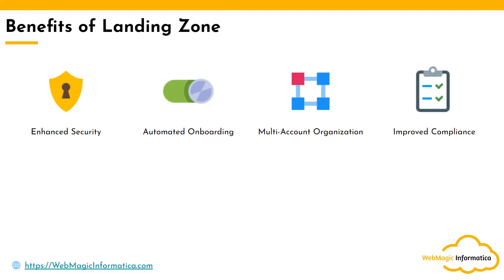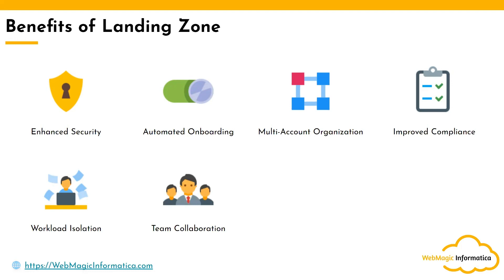Landing zone lets you improve your compliance by putting security or compliance controls on your resources. For example, whenever a new cloud account is onboarded it shouldn't have any default network, or you shouldn't be allowed to create a virtual machine with a public IP address — it enforces certain compliance guardrails. It also lets you do workload isolation by creating proper business units or folders within your cloud account, or creating multiple cloud accounts if you're coming from an AWS world, so you can isolate your workloads.